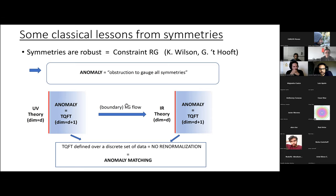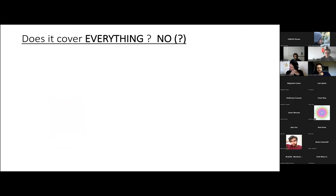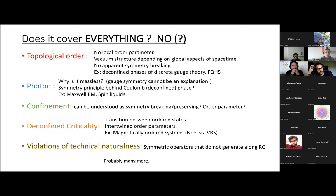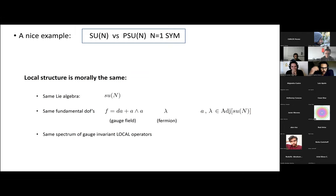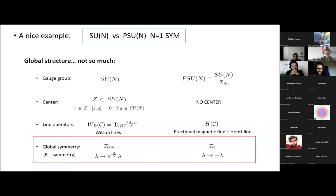A natural question is whether these considerations allow us to make predictions about everything. The naive answer is no, because there are plenty of examples that don't fit within these paradigms. Rather than going over those, let me go to a more concrete and simple example that will serve as an illustration, and we will carry it along the talk. The exercise I'm proposing is to compare SU(N) and PSU(N) N=1 super Yang-Mills. Locally, the structure is essentially the same: both groups have the same Lie algebra, the same local degrees of freedom, and essentially the same spectrum of gauge-invariant local operators.